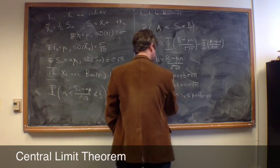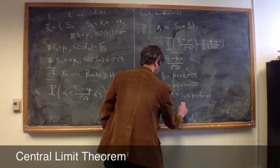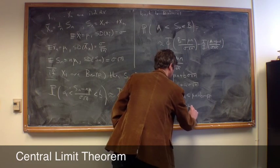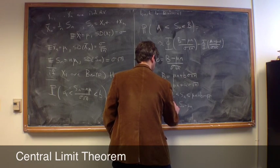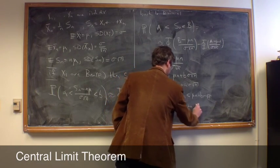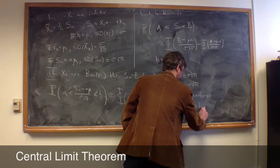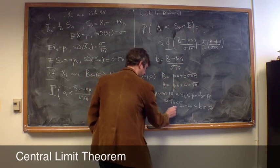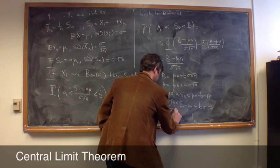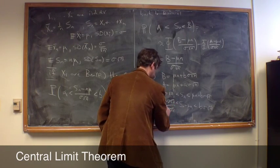And now, if we rearrange things, we can subtract the mu n's over, and we get the Sn minus mu n, and that's less than A sigma square root of n. And on this side, we have B sigma square root of n. And now, if we just divide through by sigma square root of n, these cancel, and this is equal to A.